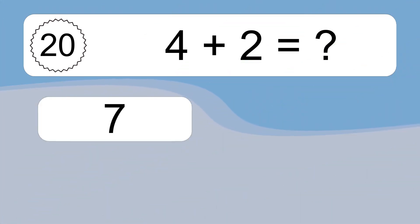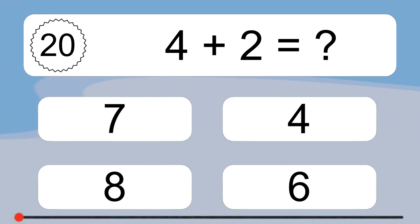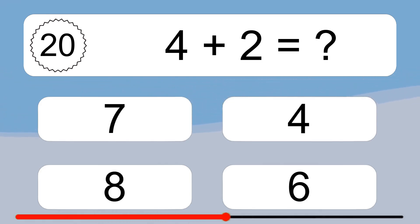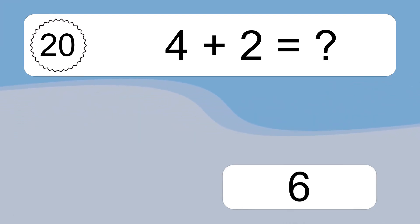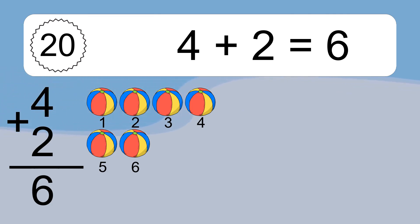4 plus 2 equals what? 4 plus 2 equals 6. Let's count it: 1, 2, 3, 4, 5, 6.